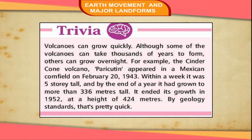Trivia: Volcanoes can grow quickly. Although some volcanoes can take thousands of years to form, others can grow overnight. For example, the cinder cone volcano Paracutin appeared in a Mexican cornfield on February 20, 1943. Within a week, it was five storeys tall, and by the end of a year it had grown to more than 336 meters tall. It ended its growth in 1952 at a height of 424 meters.